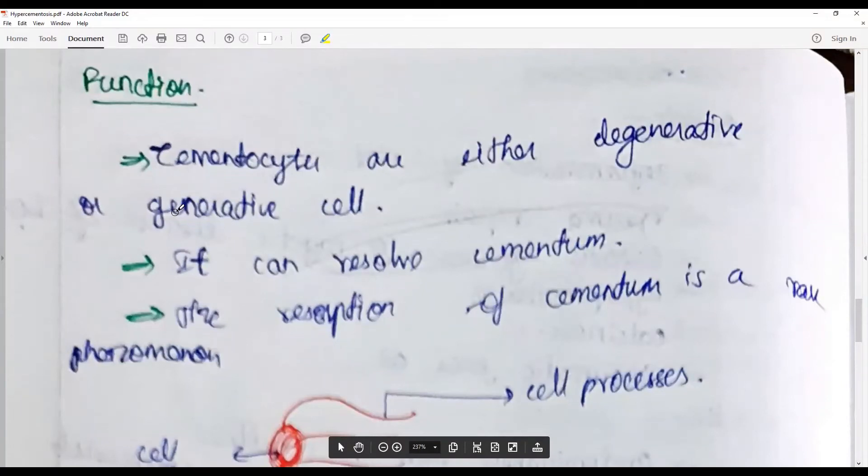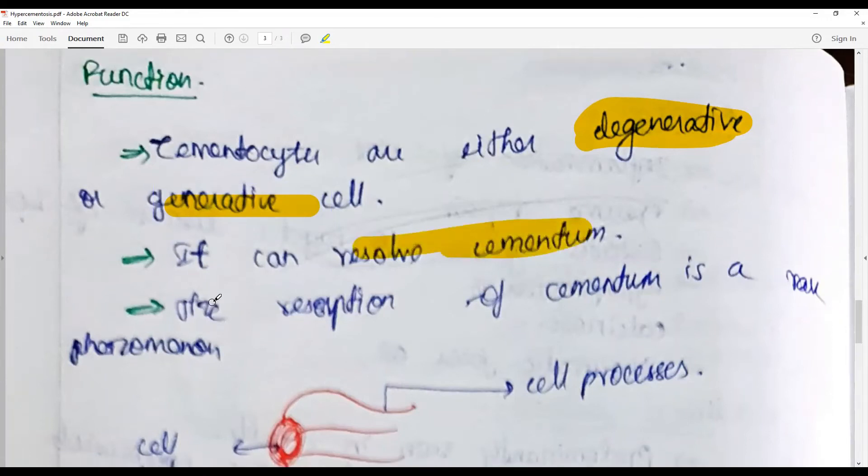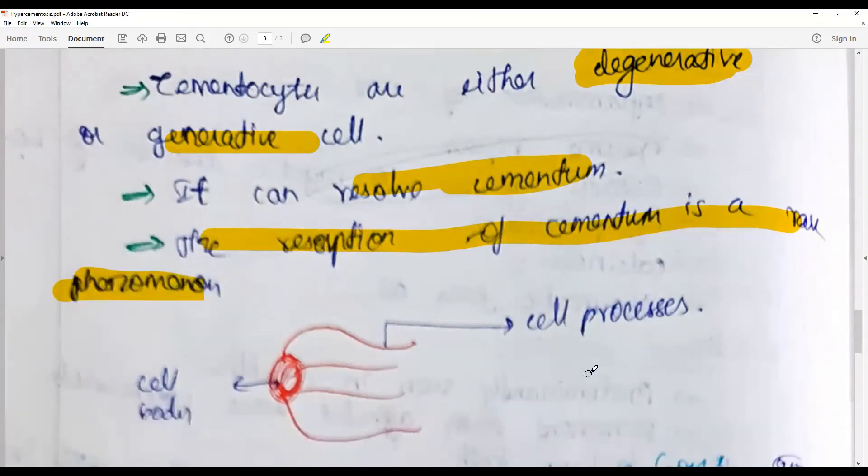They could be generative cells or completely degenerative or regressive cells. When appropriately stimulated, these generative cells can form cementum. Resorption of cementum is a rare phenomenon because, unlike bone, cementum is a static substance.